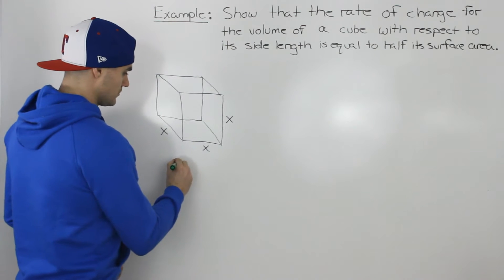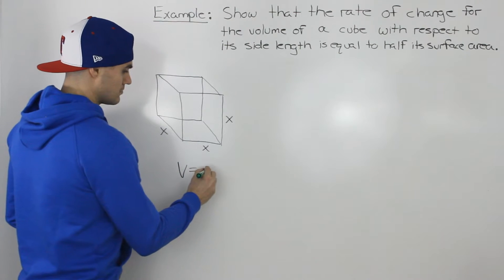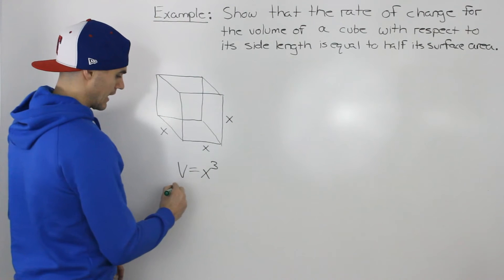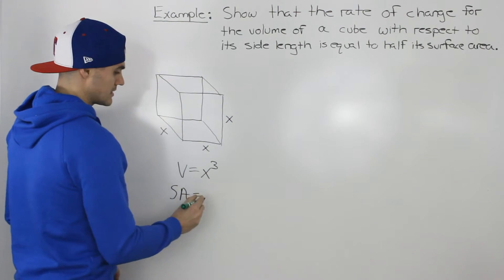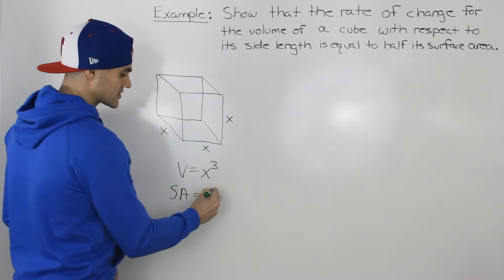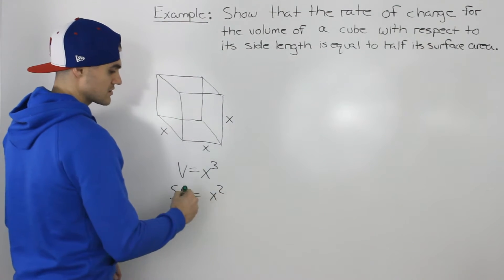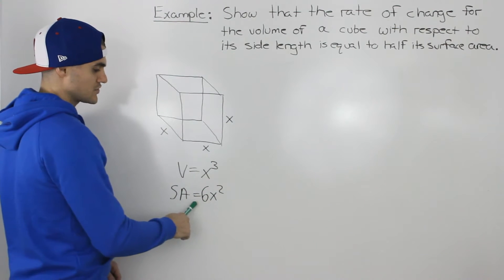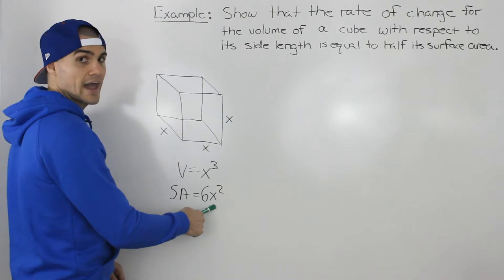So the volume of this cube is going to be x cubed. Length times width times height. And then the surface area, there are six faces and each face has an area of x squared, and because there's six of them we multiply that x squared by six. So the surface area is equal to 6x squared.